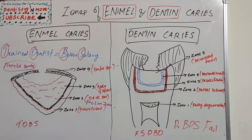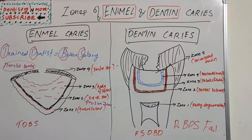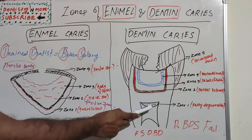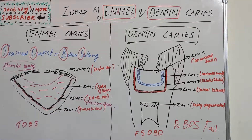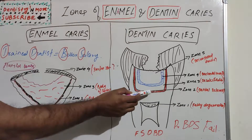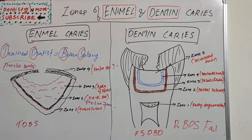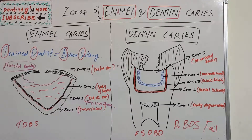Zone 2 is the zone of dentinal sclerosis. This zone shows sclerosis where deposition of calcium salts in the dentinal tubules takes place, giving the dentine a sclerotic appearance. There is also damage to the odontoblastic zone, but importantly there are no bacteria in this zone. This zone is capable of remineralization.